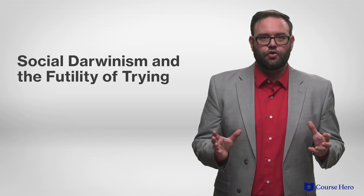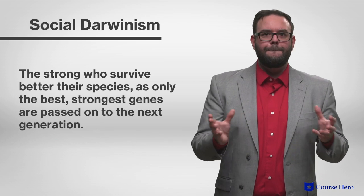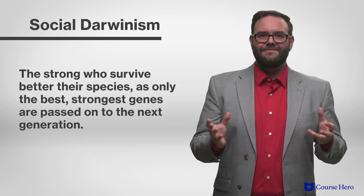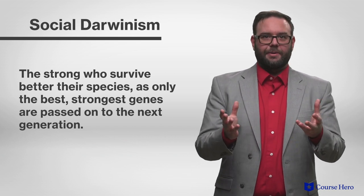Social Darwinism and the futility of trying rules the novel. The theory of social Darwinism suggests that in society, only the fittest survive. The same can be said of the residents of Packingtown. The capitalist machine and the workers desperately clinging onto it for survival marches steadily on, and those strong enough to survive the harsh winters, brutal working conditions, and cutthroat competition will succeed. According to the theory of social Darwinism, the strong who survive better their species, as only the best, strongest genes are passed on to the next generation. But in Packingtown, the strongest are wealthy, and they survive because capitalism serves to benefit only them, crushing everyone else, regardless of their abilities or hopes.